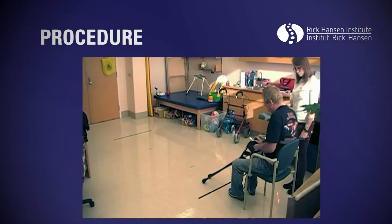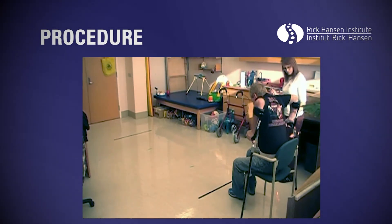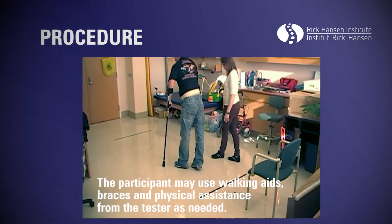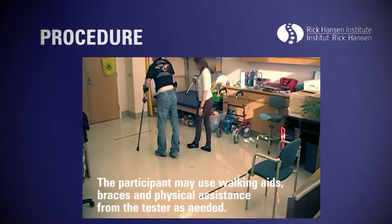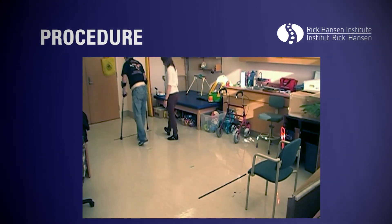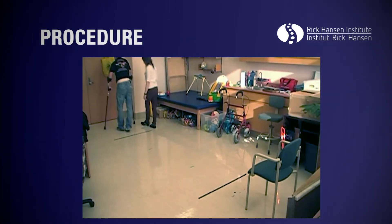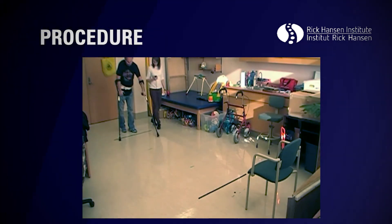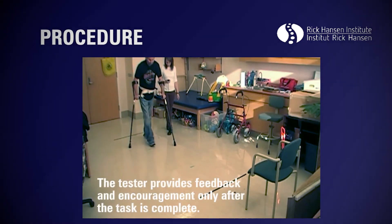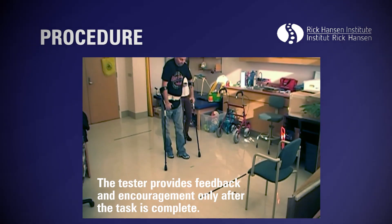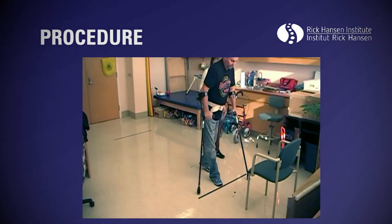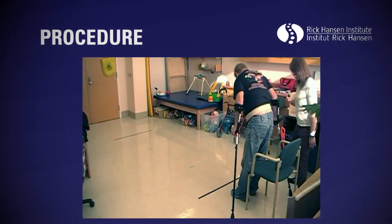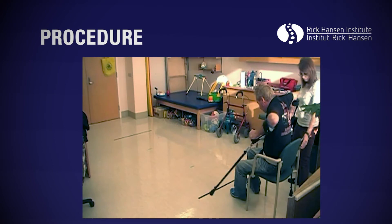You may use the arms of the chair if needed. The tester says go and begins timing. The tester monitors the 3 m line to ensure both the participant's feet cross the line before turning. The tester stops timing once the participant is fully seated with his or her back against the chair, then records the time and assistance rating.